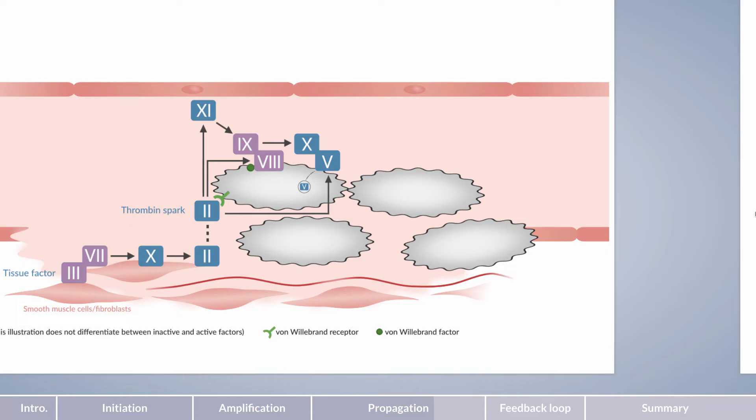Now, prothrombin is rapidly converted to active thrombin. To relate this to the cascade model, the factors that are assigned to the intrinsic pathway are responsible for generating most of the thrombin, with over 95% of the total amount of thrombin. This leads to a decisive step in the coagulation process.